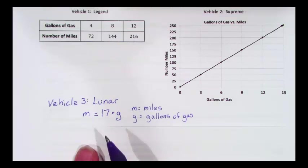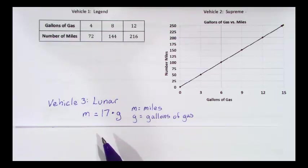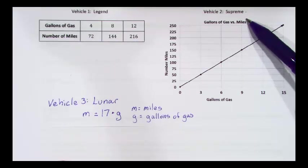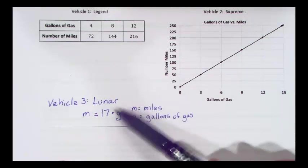These are three very common ways to see a unit rate for a particular value. In this case, we've got three vehicles. The first one is the Legend, the second one is called the Supreme, and the third is called the Lunar.